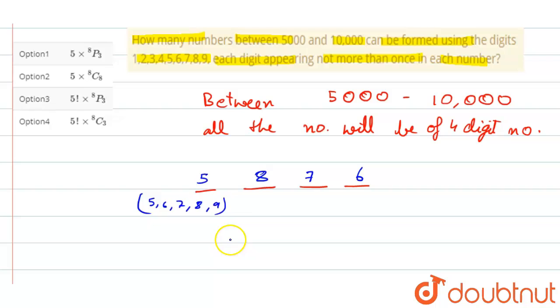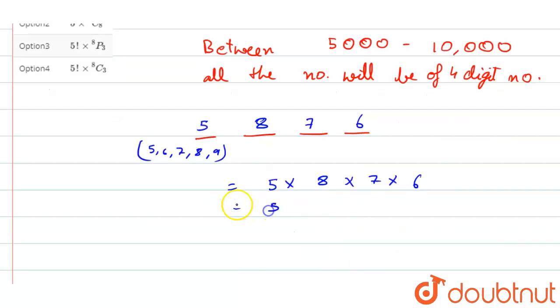So that is equal to 5 × 8 × 7 × 6, that is equal to 5 × 8P3.